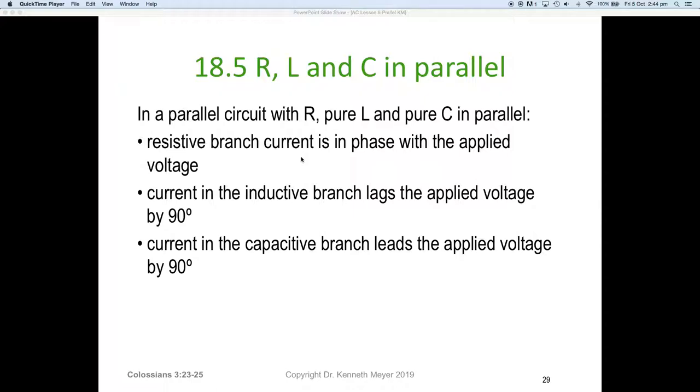The current in the inductive branch lags the applied voltage by 90 degrees, and the current in the capacitive branch leads the applied voltage by 90 degrees. The current in the inductive branch lags the applied voltage by 90, the current in the capacitive branch leads the applied voltage by 90, and if you compared the current in the inductive and capacitive branches with each other, they would be 180 degrees from each other.